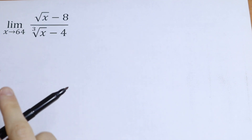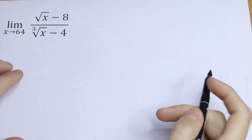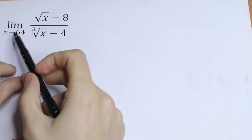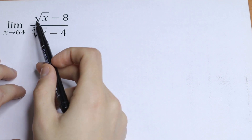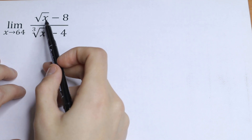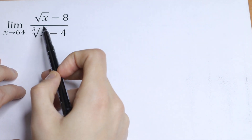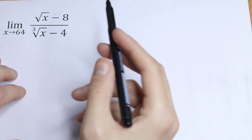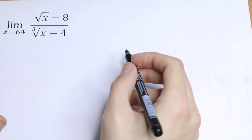Hello everyone and welcome back to High Mathematics. Today we have an interesting limit. What is the limit as x approaches 64 of the function square root of x minus 8, all over cube root of x minus 4. How can you solve this?